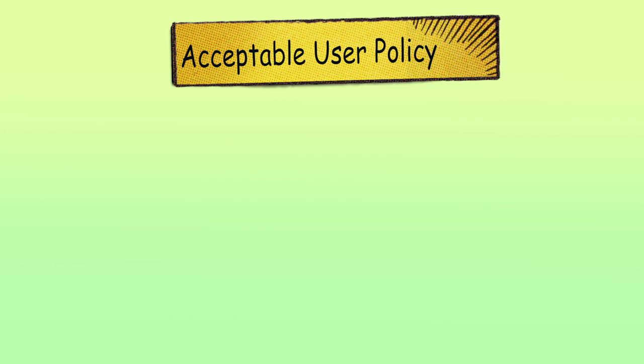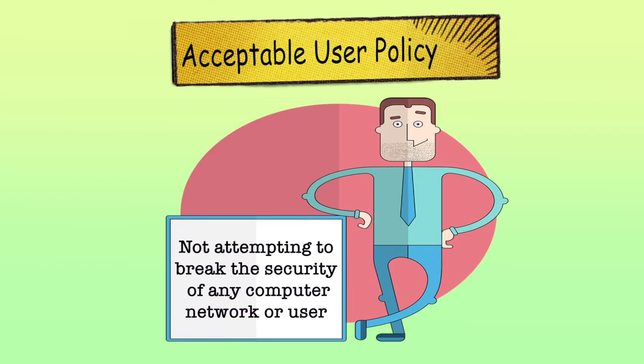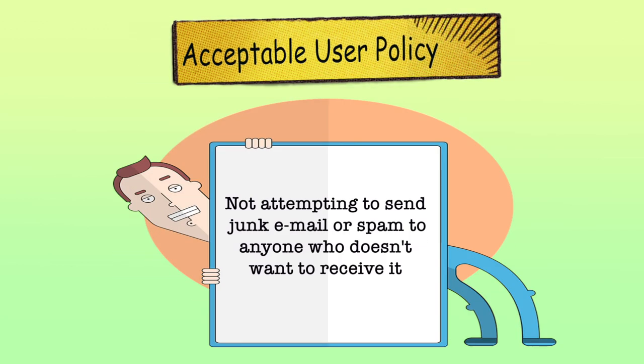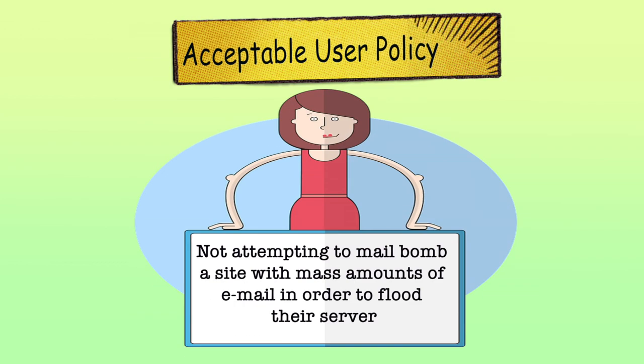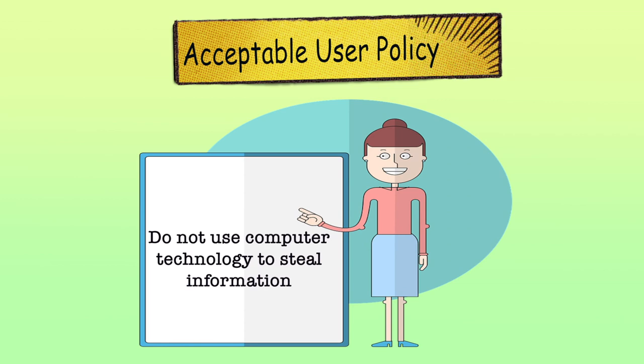In institutions, one should have an acceptable user policy that describes the use of internet and other information technologies and networks. The rules in these policies often apply to both staff and students, and everyone including parents needs to understand these policies. An acceptable user policy may contain rules such as: not using the service to violate any law; not attempting to break the security of any computer network or user; not posting commercial messages without prior permission; not sending spam email; not mail-bombing a site to flood their server; and not using computer technology to steal information.